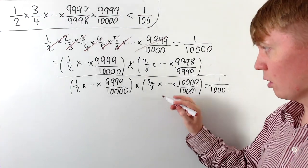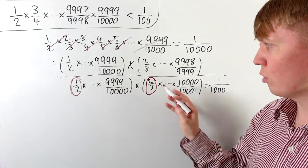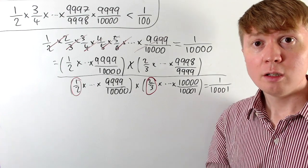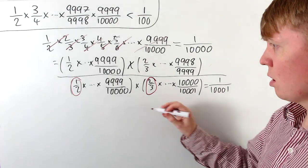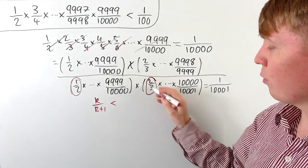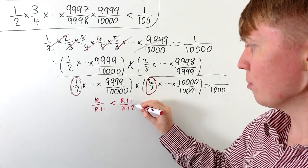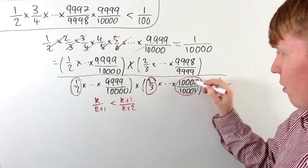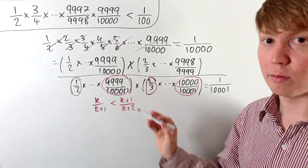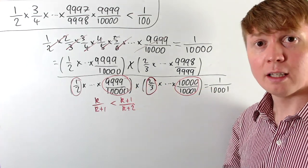If we examine the second product closely, we see for example we've got two thirds here, whereas in our original product we've got one half — a bigger fraction in the second product. The next one, four fifths, is going to be bigger than the three quarters in our first product. In general, k over k+1 is always going to be less than k+1 over k+2. The upshot is that everything in our second product is going to be bigger than everything in our first product.